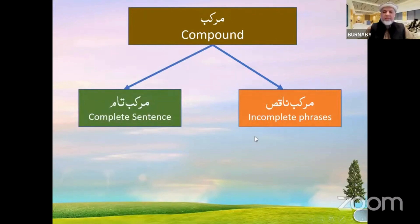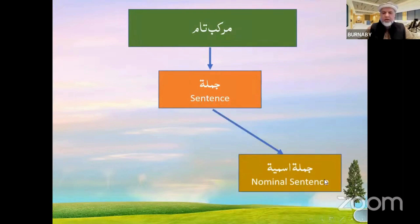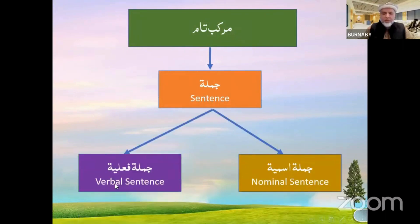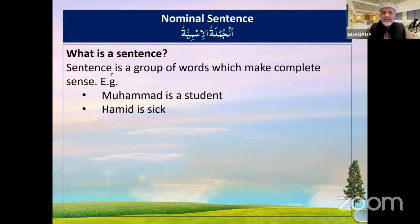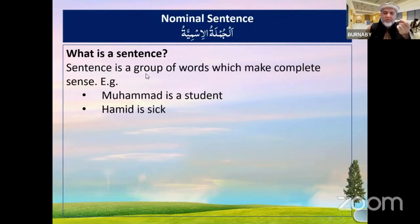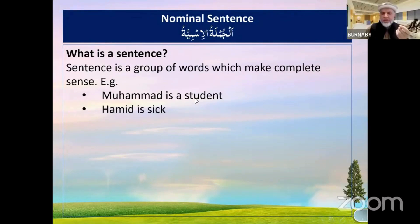In the murakab tam we have two kinds of sentences: jumlah ismiya and jumlah feliya. In this class we are focusing on jumlah ismiya. A sentence is a group of words — a murakab — and in such a group of words which make complete sense, for example: Muhammad is a student, Hamid is sick.